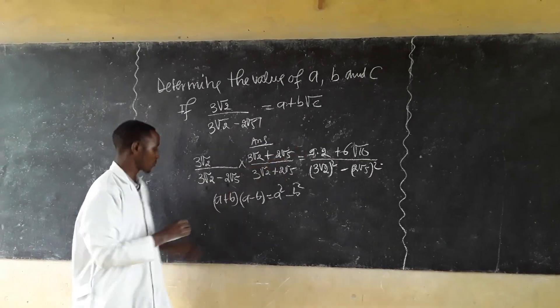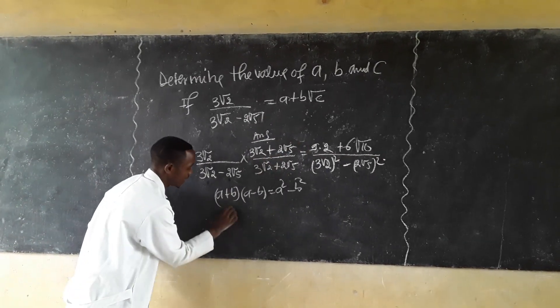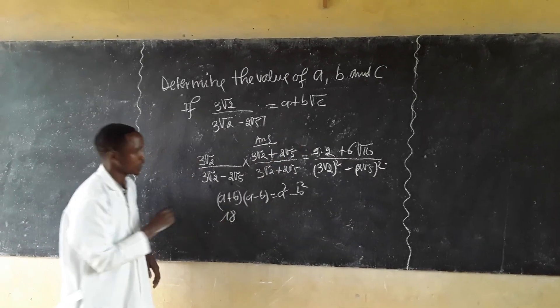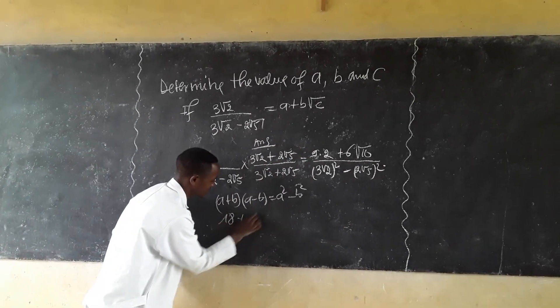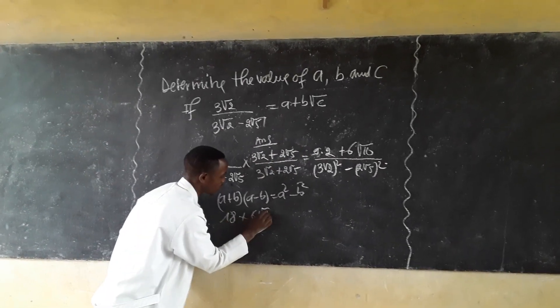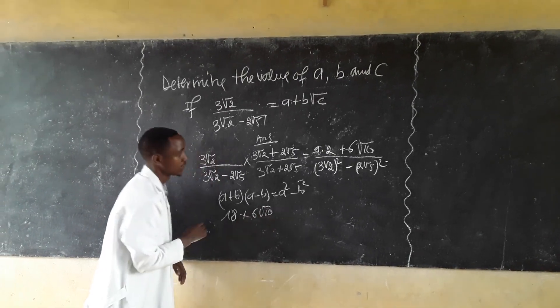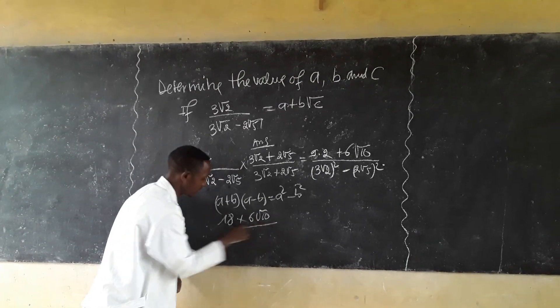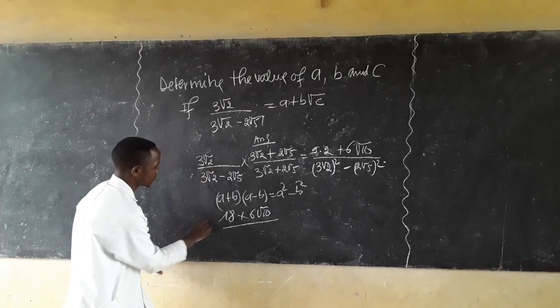So this works out to 18 plus 6 in the numerator terms, divided by the denominator expression.